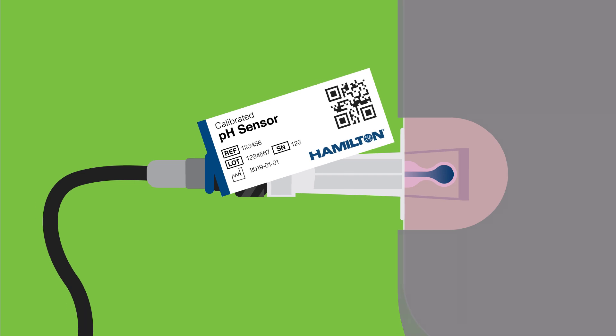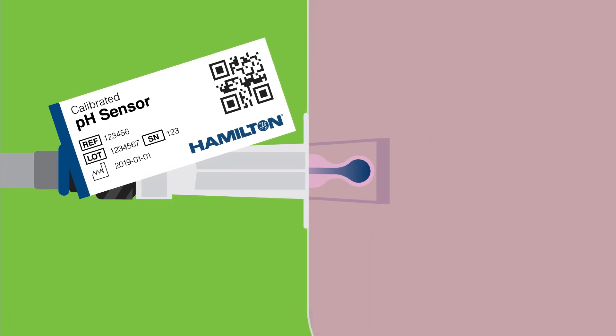When compared to current single-use optical pH methods, Hamilton OneFirm sensors exhibit low drift and ensure the trusted precision and stability of glass-based membranes.